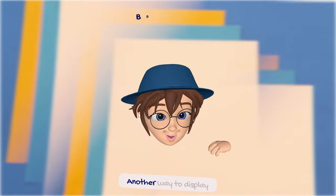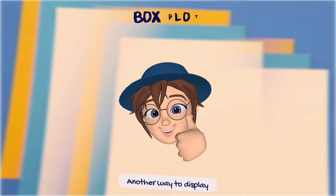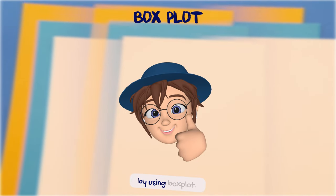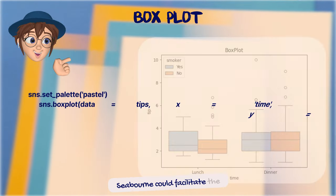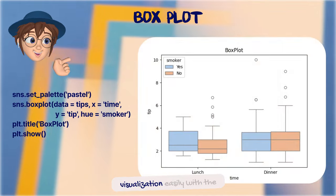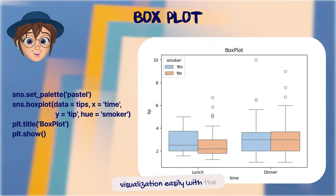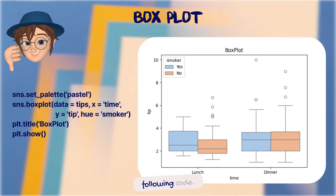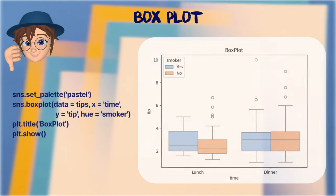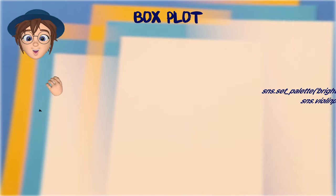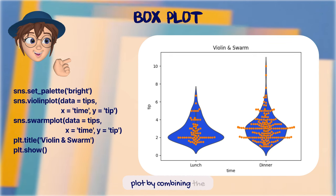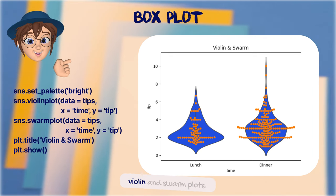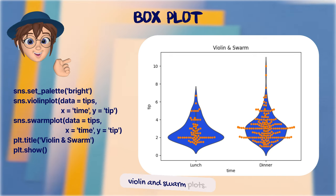Another way to display the data distribution is by using a box plot. Seaborn can facilitate this visualization easily with the following code. We can also show the data points on the plot by combining the violin and swarm plots.